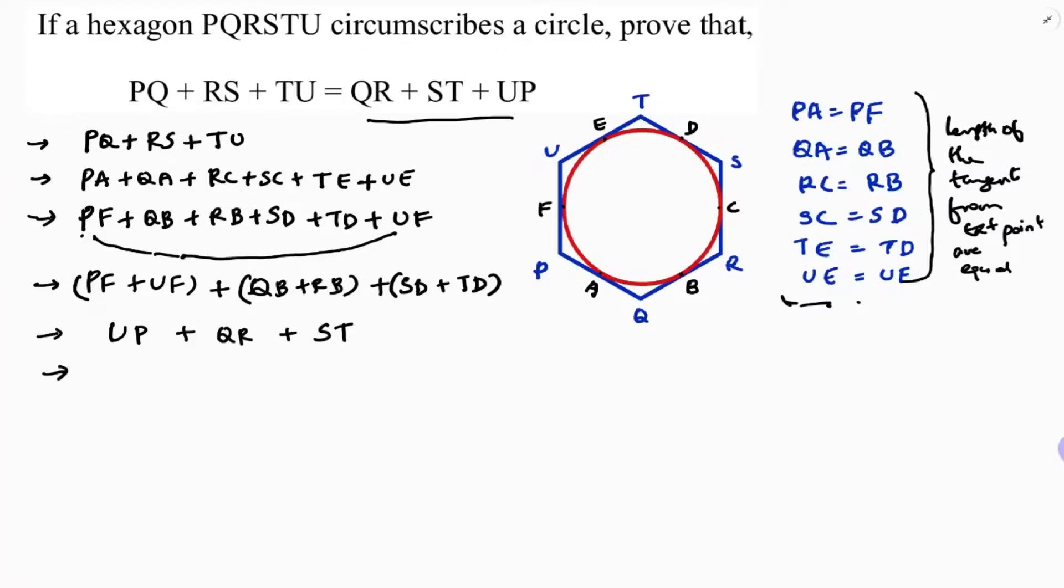Therefore, PQ + RS + TU equals QR + ST + UP. LHS equals RHS. So we got this method in this method.